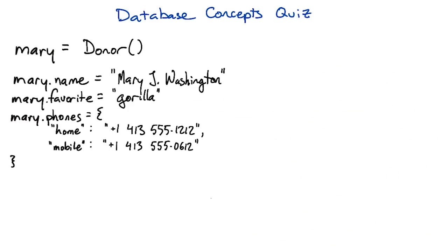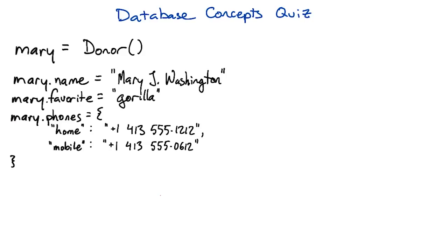That way, for instance, when there's a newborn baby gorilla in the zoo, the zookeepers can call Mary up and tell her about it.